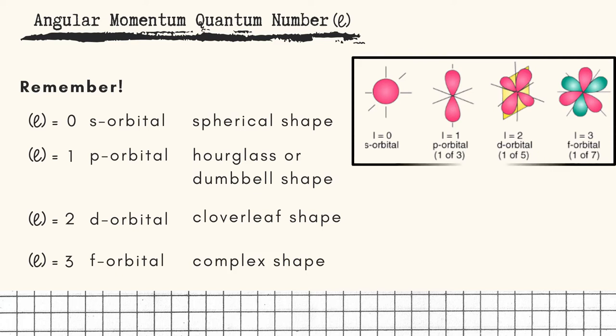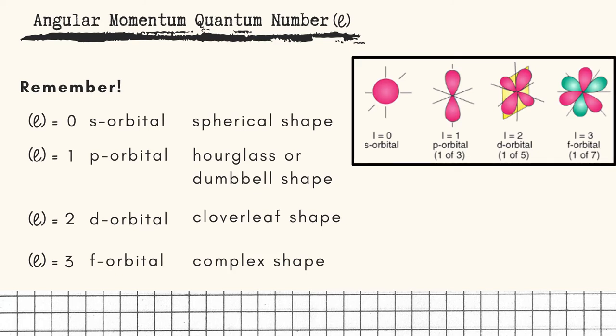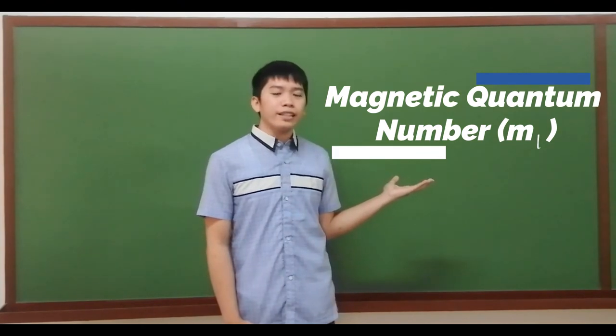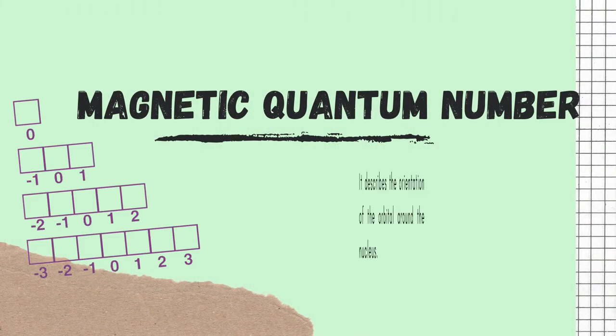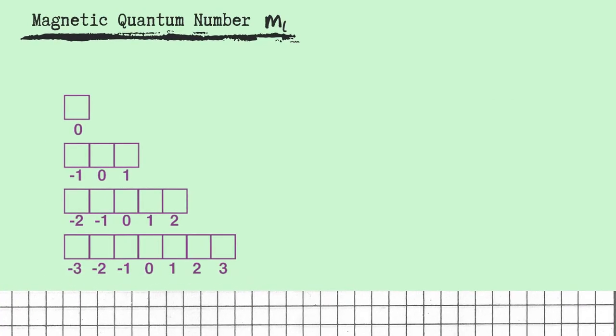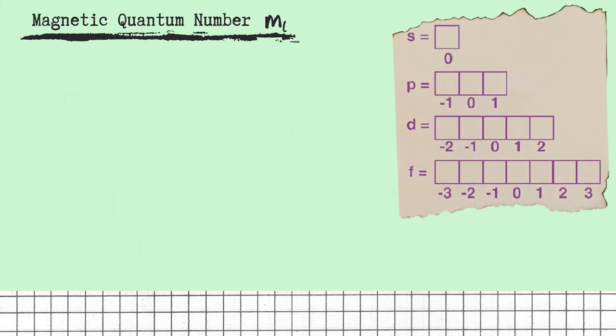This is how the orbitals and their shape look like. Let us now proceed with the third quantum number, which is the magnetic quantum number. Represented as small letter M sub L. It describes the orientation of the orbital around the nucleus. The possible values of M sub L depends upon the value of L quantum number.